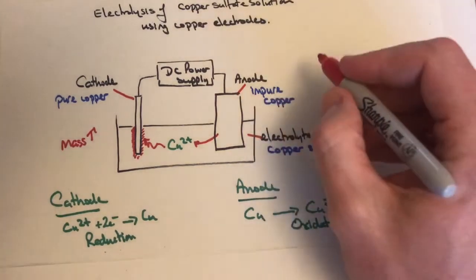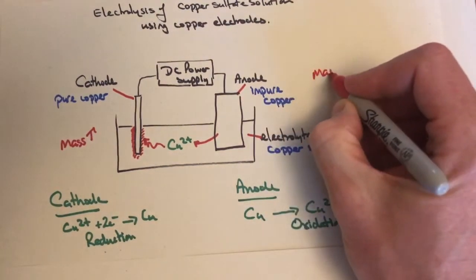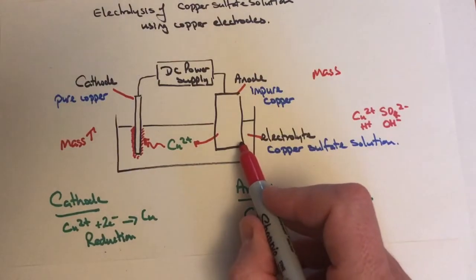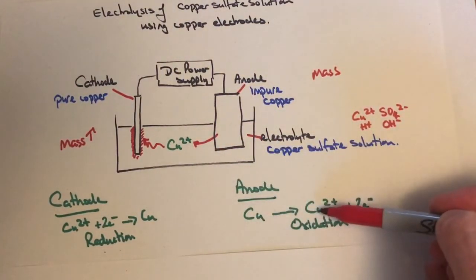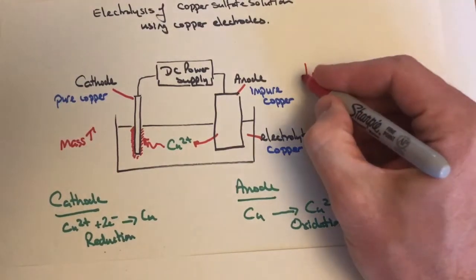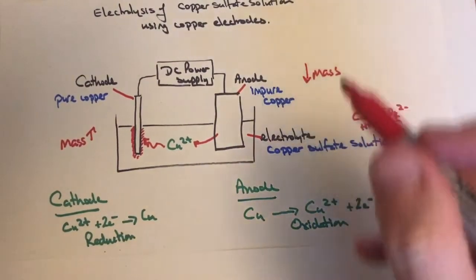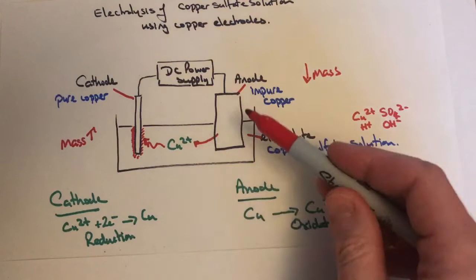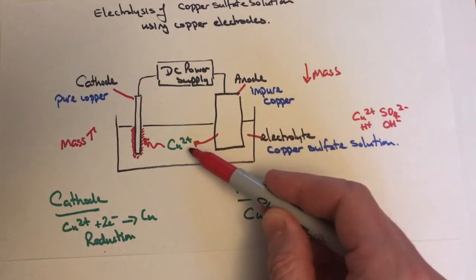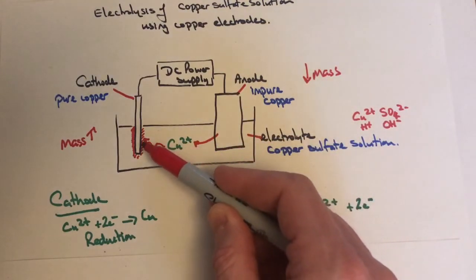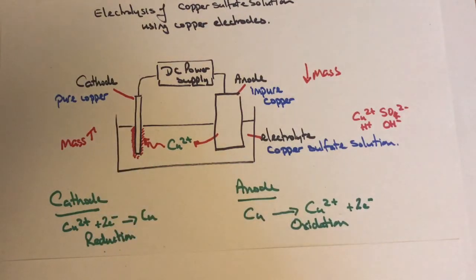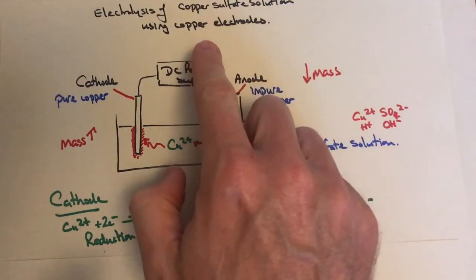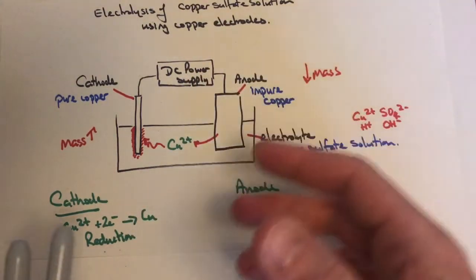If you weigh the anode at the beginning, its mass will decrease as it breaks down and forms copper ions. As the copper ions are attracted to the cathode, the cathode's mass increases as new copper is made.